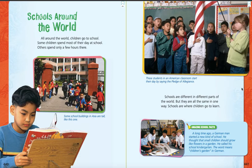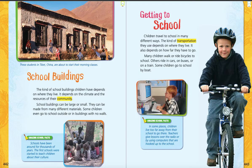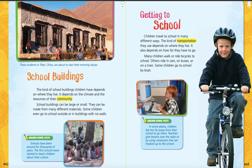Let's go to the next page. Here's our heading: school buildings. And underneath the picture at the very top of the page, we have our caption: these students in Tibet, China, are about to start their morning classes. That school looks a lot different than ours, doesn't it? It looks like they have to go outside to go from class to class — they don't have hallways. It looks like each classroom has an outside door instead of a hallway. Interesting. The kind of school buildings children have depends on where they live. It depends on the climate and the resources of their community.